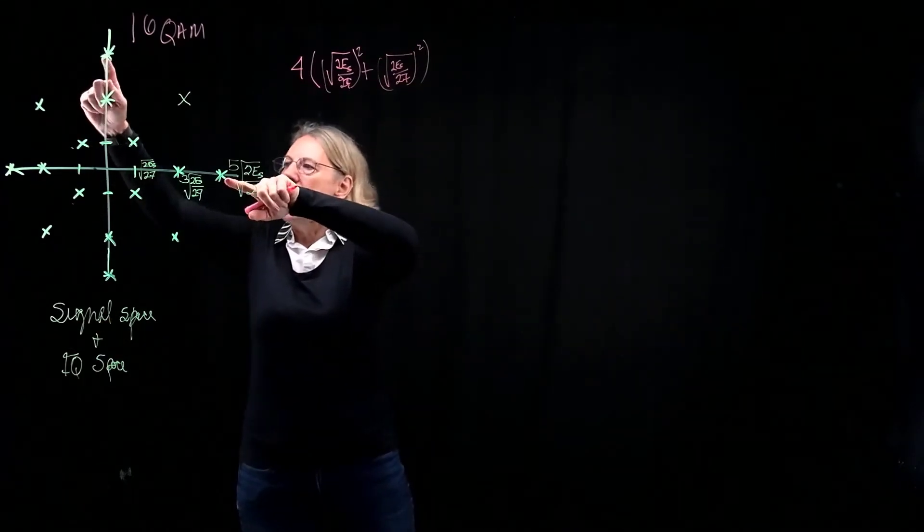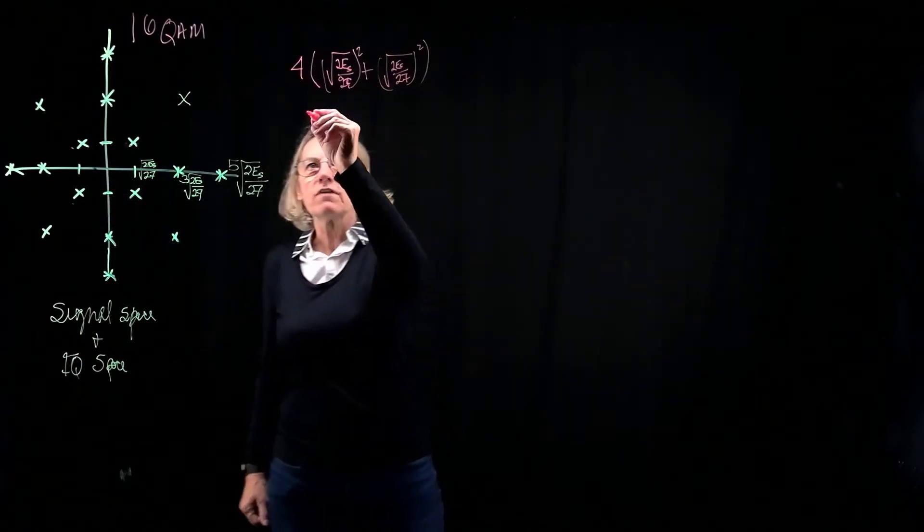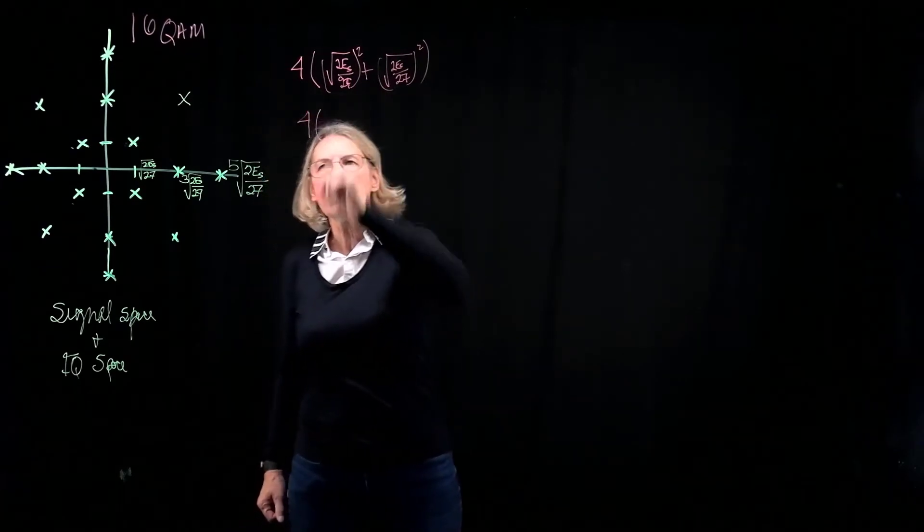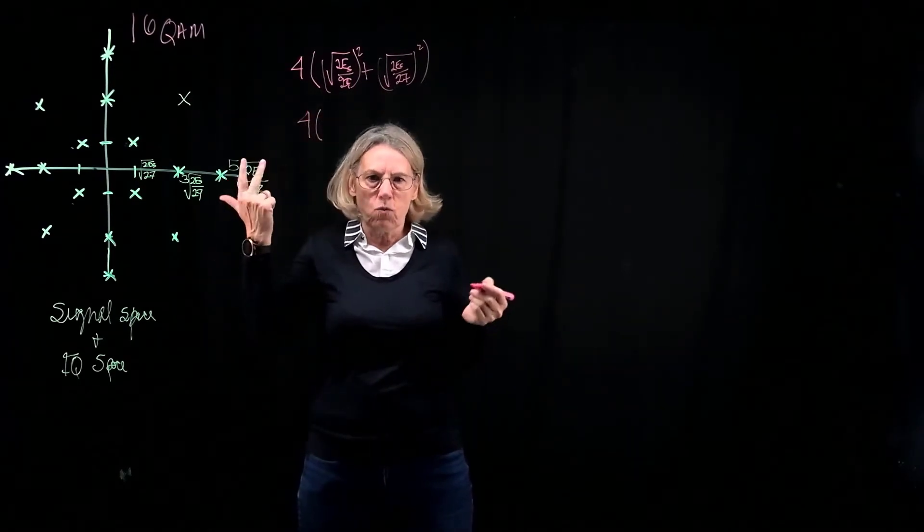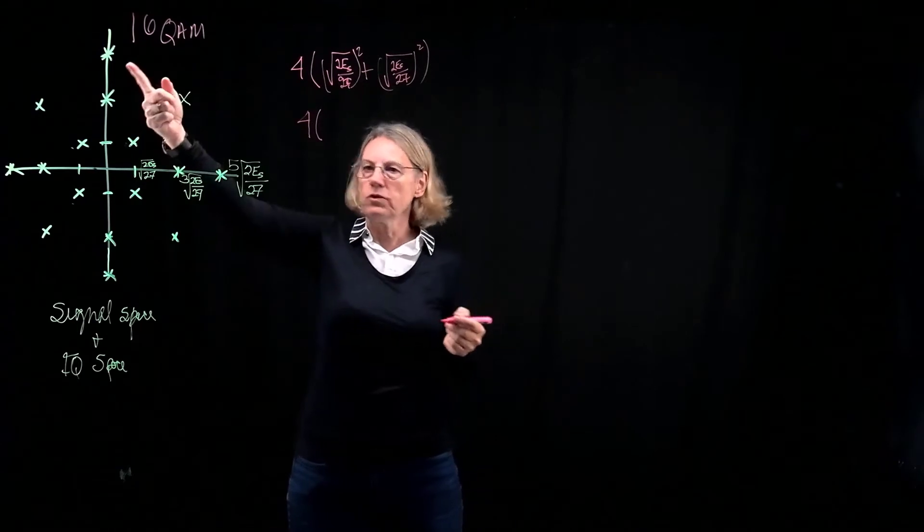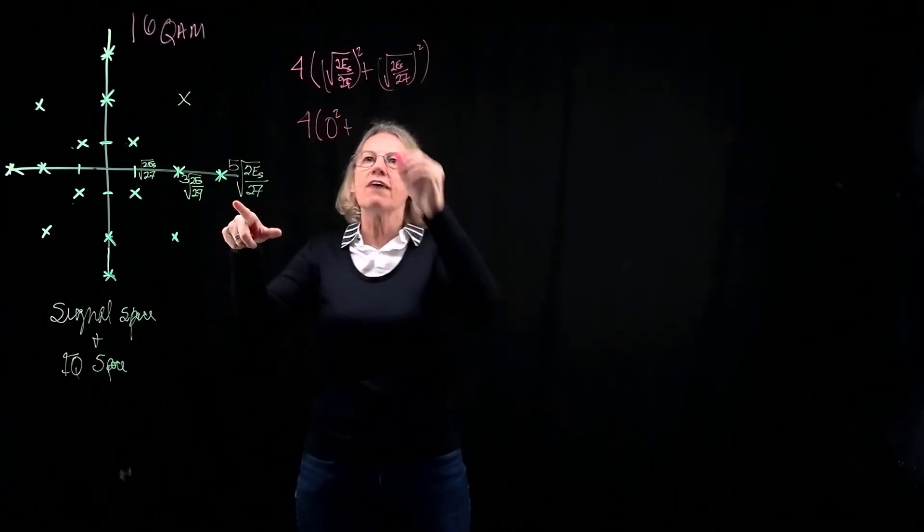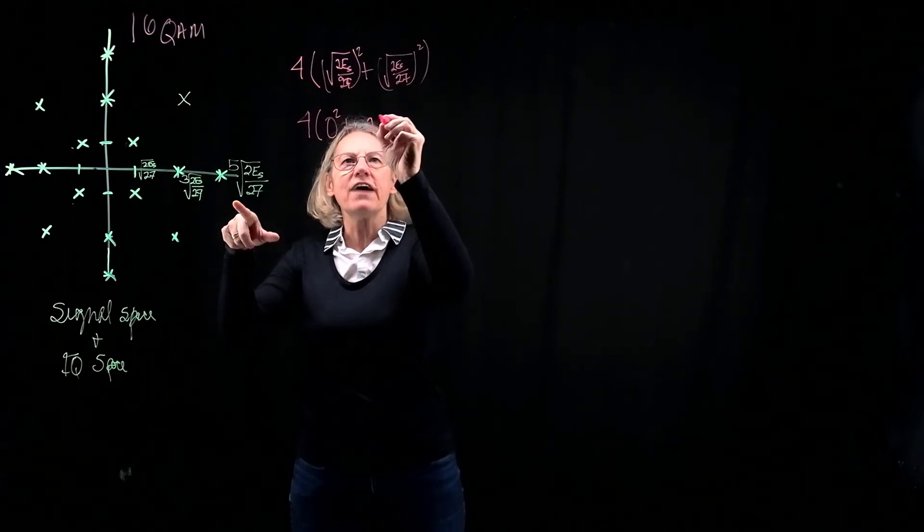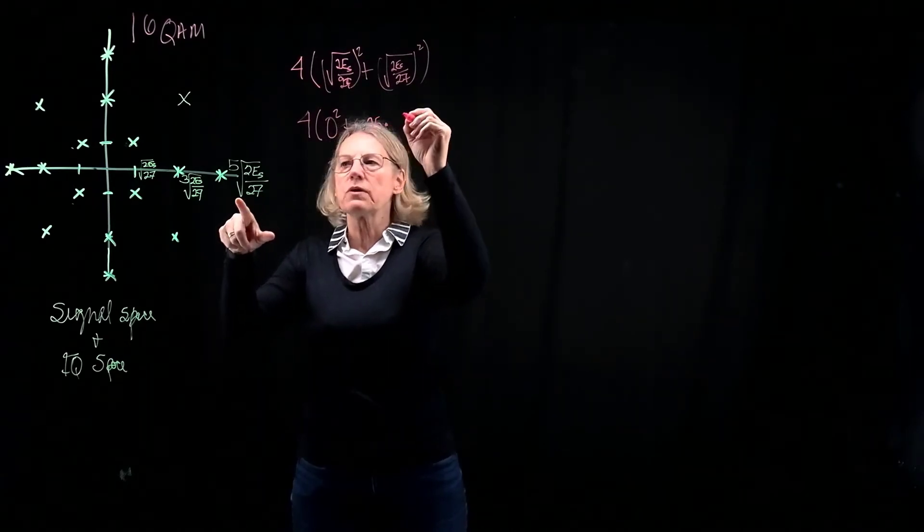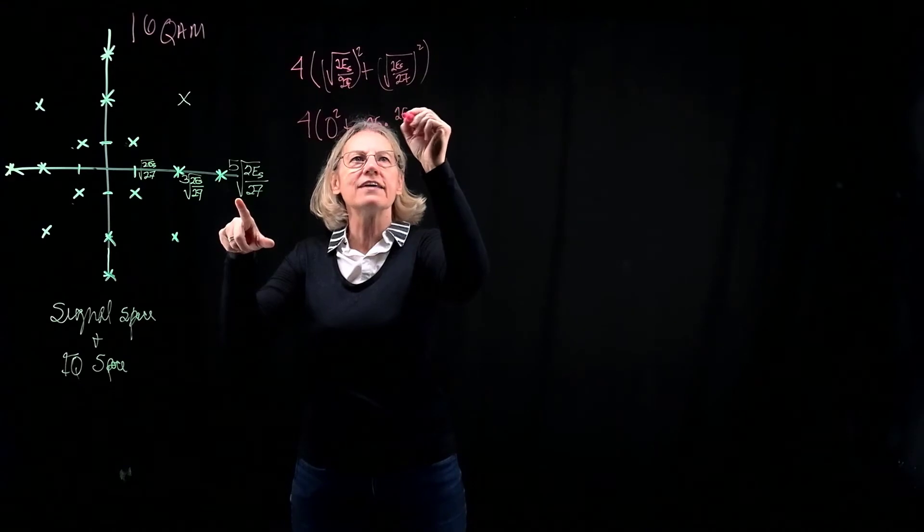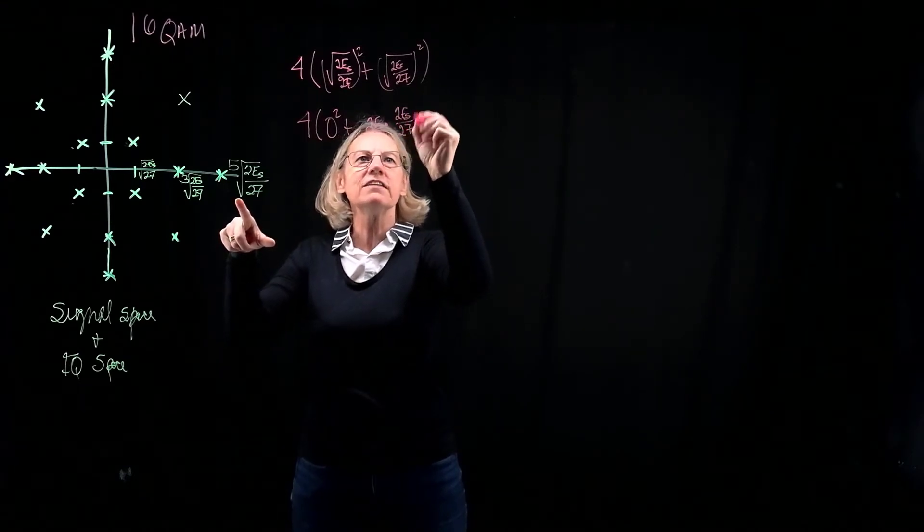If I took the most outer points here, what would I get? Well, there's four of them. So I'll start with four. And now there's only one coordinate. There's only an x, or there's only a y, so it'll be like zero squared. And then the other one, now I have 5 squared, 25 times. And then the square root squared would give me 2ES over 27, for instance.